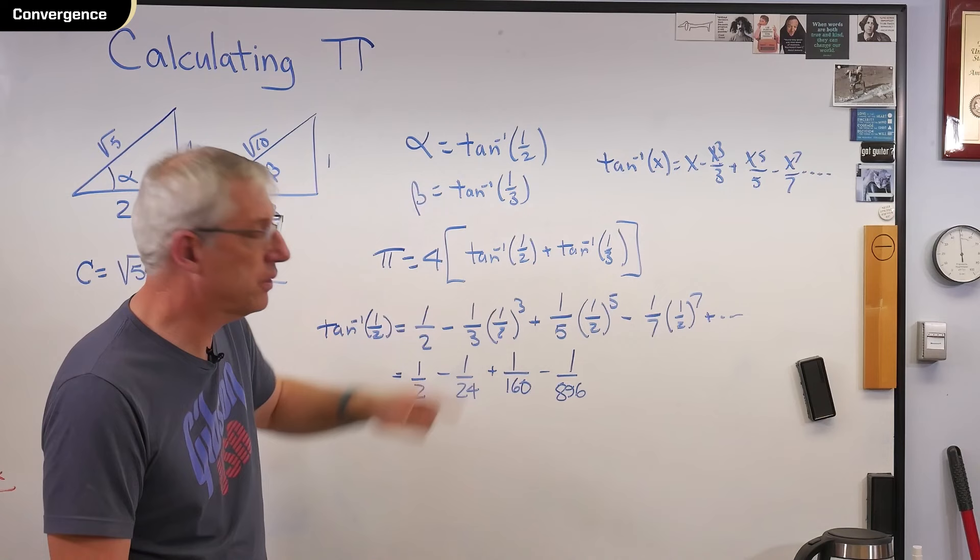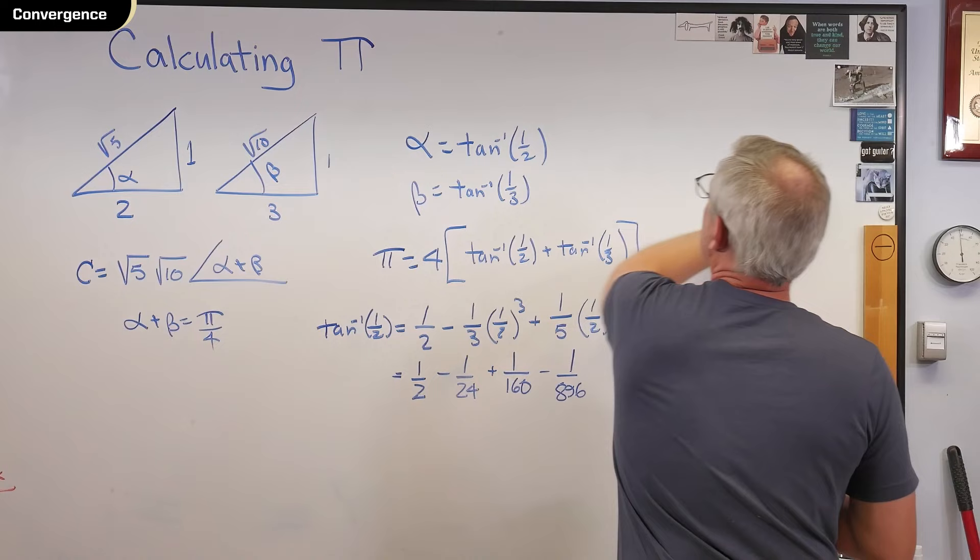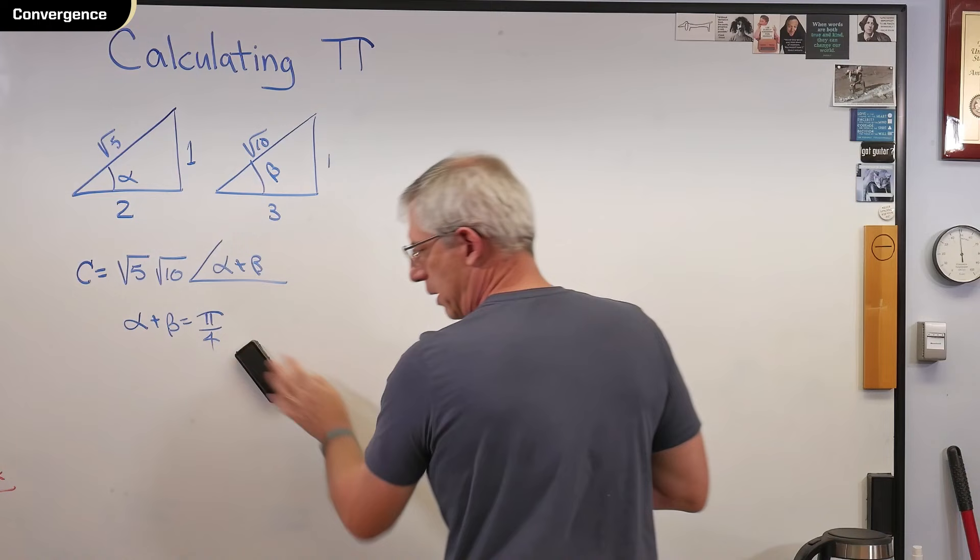So one last thing, this works. Are there others? Oh, you bet. There's many, many, many others. This isn't the equation or the formula that Machin originally published in 1706. Here's the one he published.